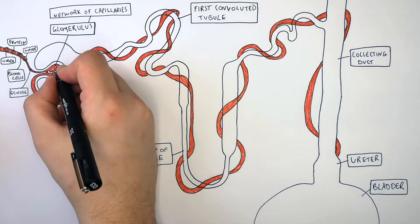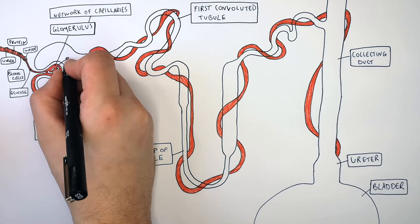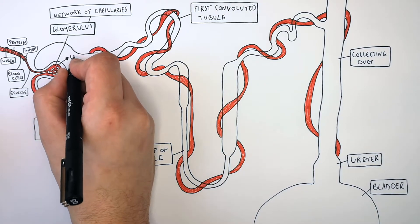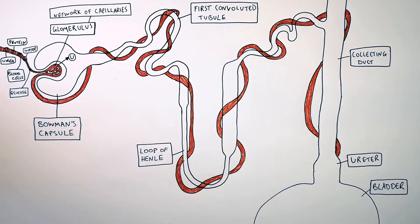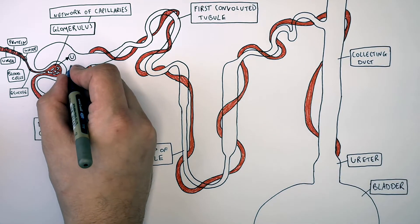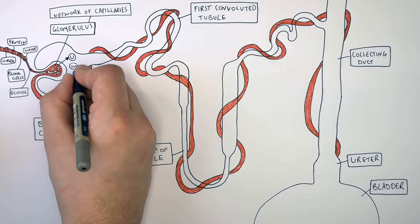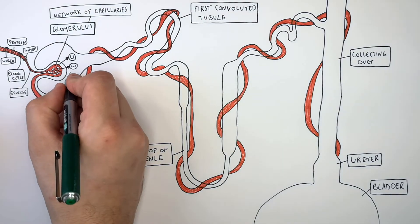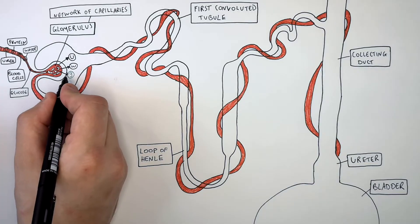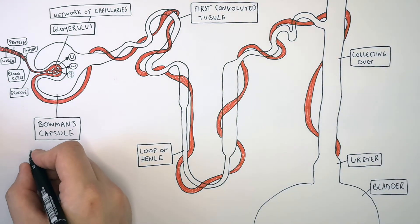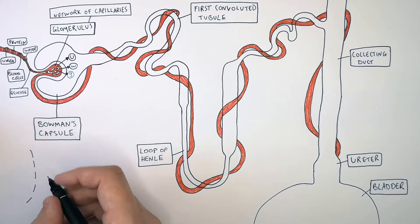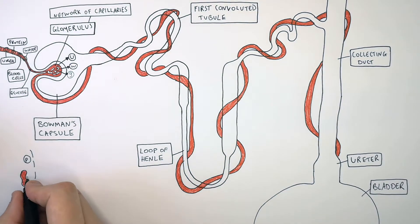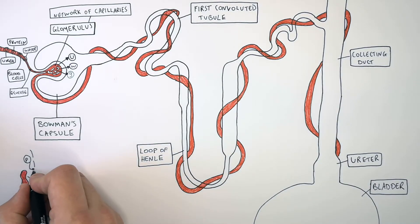The first function of the kidney is to filter molecules out of the blood. This happens between the glomerulus and the Bowman's capsule. Urea leaves the blood and enters the Bowman's capsule. Water also leaves the glomerulus and is filtered out of the blood into the Bowman's capsule. Glucose is also filtered out of the glomerulus into the Bowman's capsule.